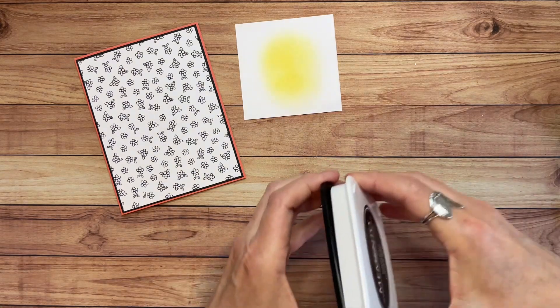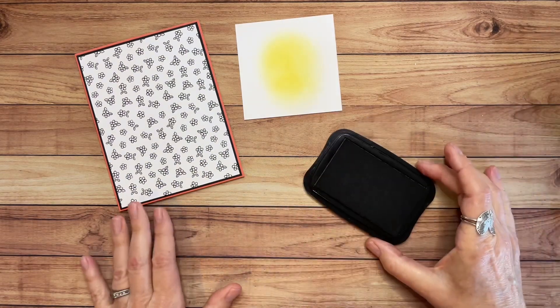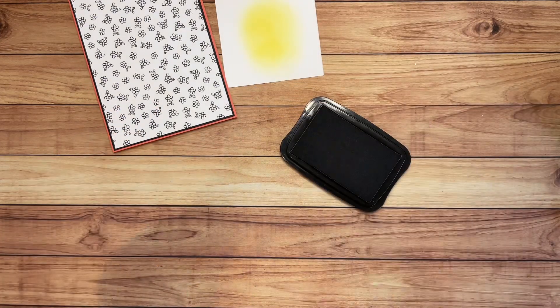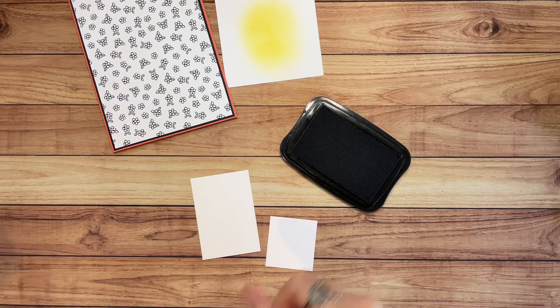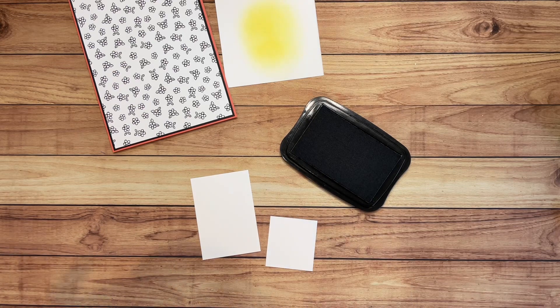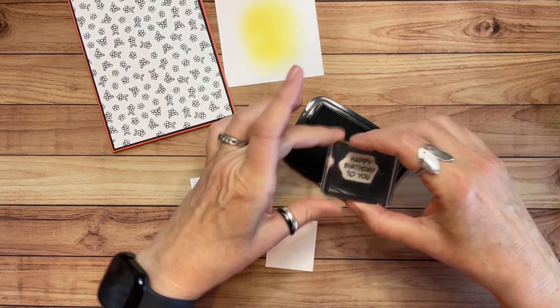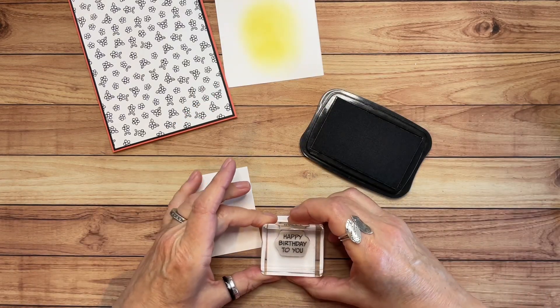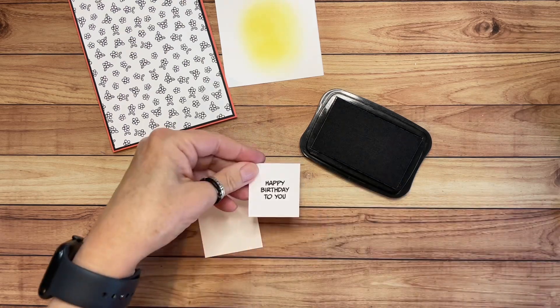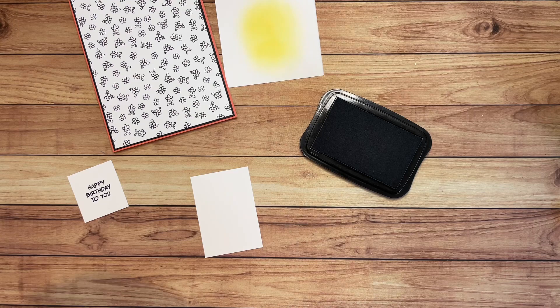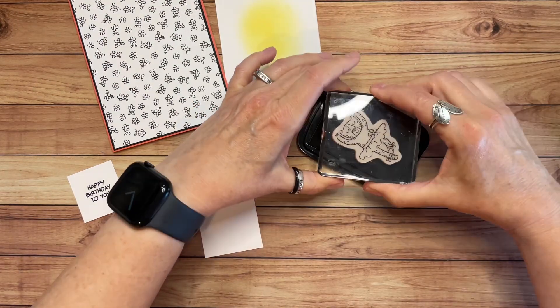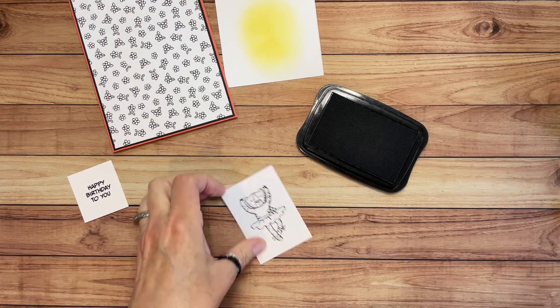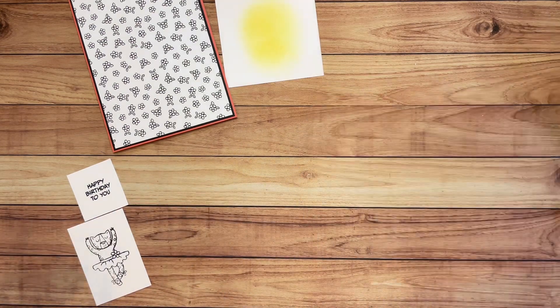Let's do some stamping. I'm going to take my Memento Tuxedo Black ink. I measured out for you all of the large pieces that are going to go on the card, but we also need some little scraps. I've got a couple of scraps of basic white. First I'm going to stamp this sentiment, happy birthday to you. It is part of the stamp set. So I'm just going to stamp it in the center here. And then I need to stamp the ballerina. Let's ink this up. And so I'm going to put her right here. There she is. It's so cute.